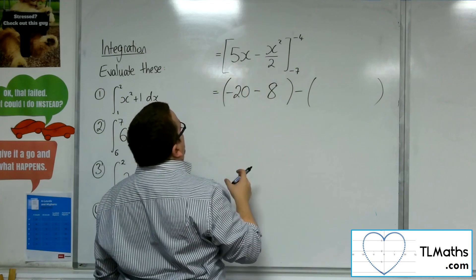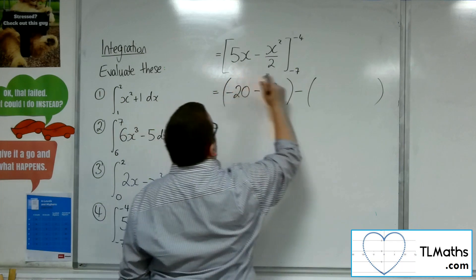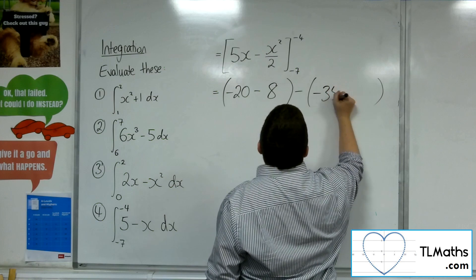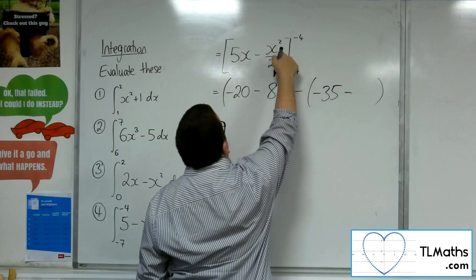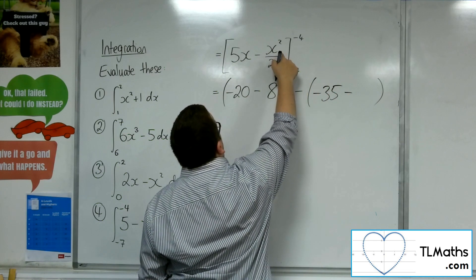Now substituting the minus 7. 5 lots of minus 7 is minus 35. Take away minus 7 squared is 49 over 2.